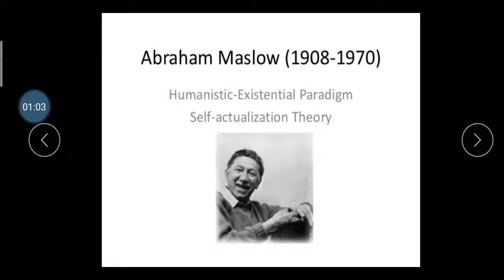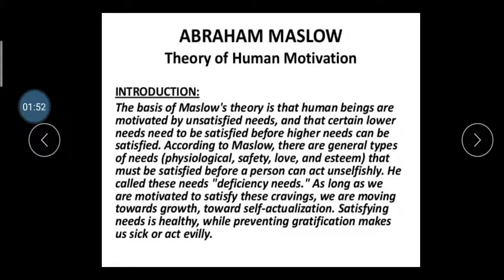Abraham Maslow, from 1908 to 1970, proposed that humanity's external pilgrimage is toward self-actualization. Abraham Maslow designed this need theory, and on that basis organizations decide how much to pay their employees and laborers, on what basis to pay their salaries, and what type of wages would be helpful to motivate employees. This theory was introduced by Abraham Maslow and is called The Theory of Human Motivation.